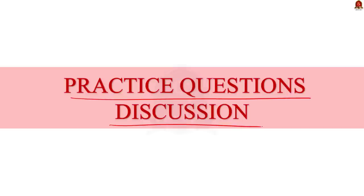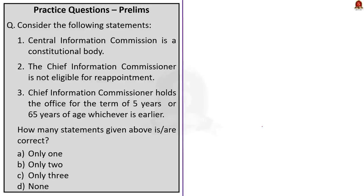Now for the preliminary practice question discussion. Look at this question about the Central Information Commission — three statements are given and you have to find how many are correct. Statement 1: Central Information Commission is a constitutional body — this is incorrect because the Constitution does not mention the Central Information Commission anywhere. Statement 2: The Chief Information Commissioner is not eligible for reappointment — this is correct. Statement 3: The Chief Information Commissioner holds office for a term of 5 years or until age 65, whichever is earlier — this is incorrect, as the term is prescribed by the Central Government, not fixed at 5 years. So the correct answer is option A, only one.